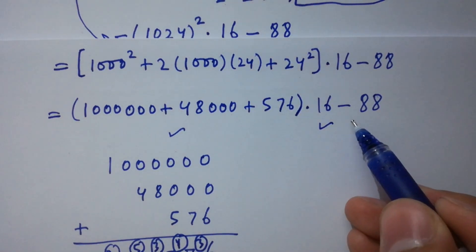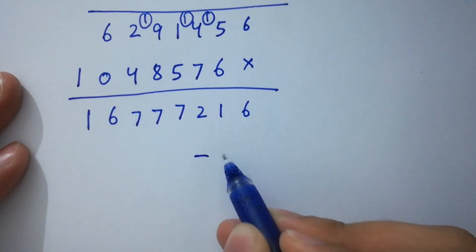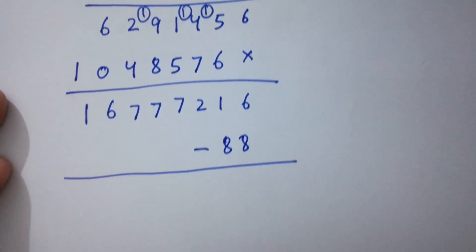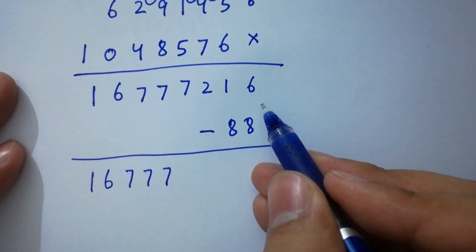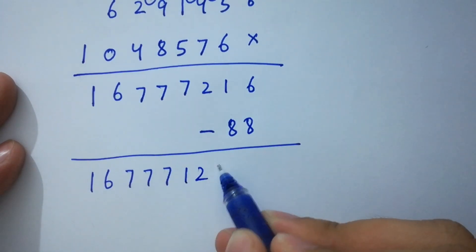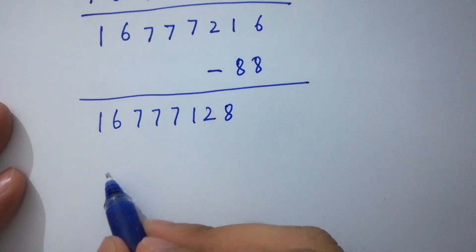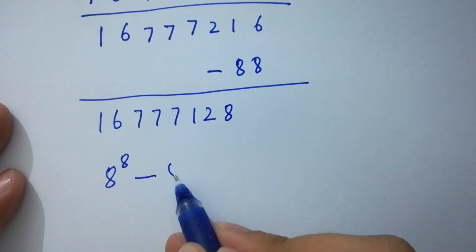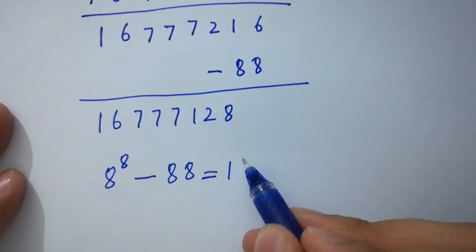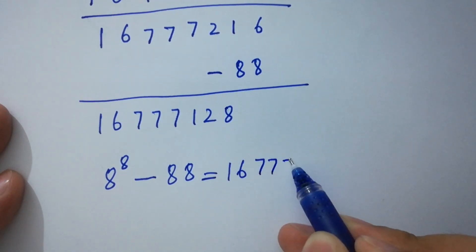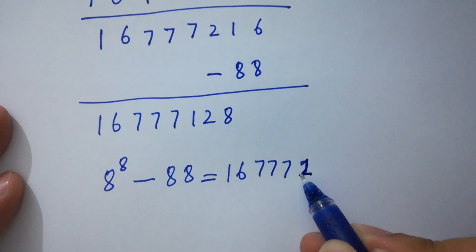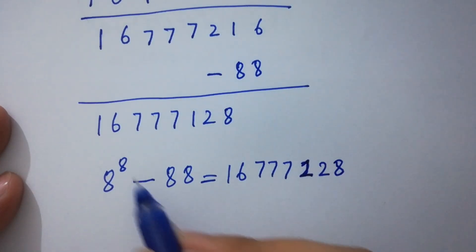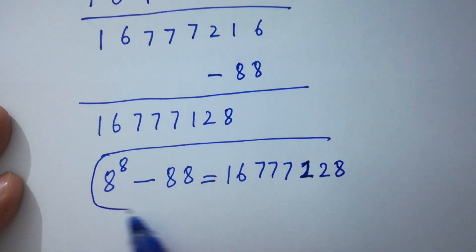Next step: subtract 88. We have 16,777,216 minus 88, which gives us 16,777,128. So finally, 8 to the power 8 minus 88 equals 16,777,128. This is our final answer.